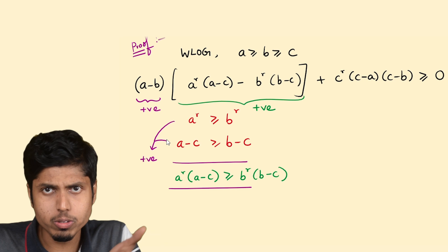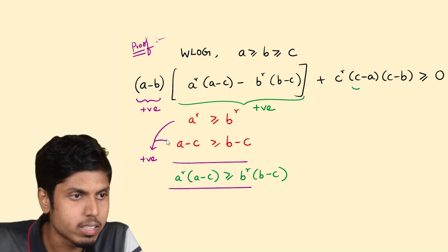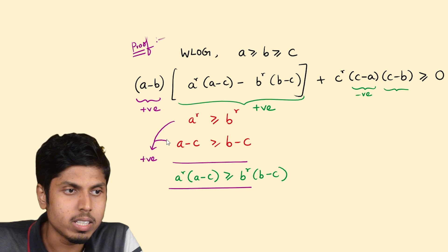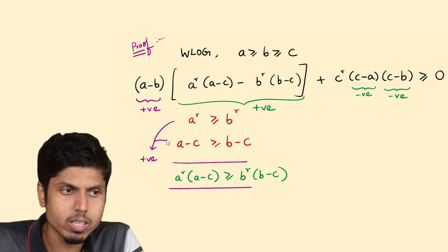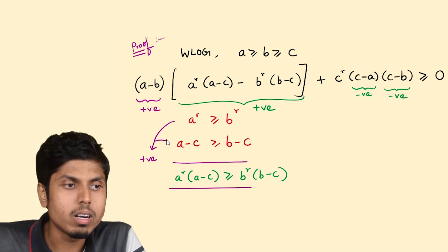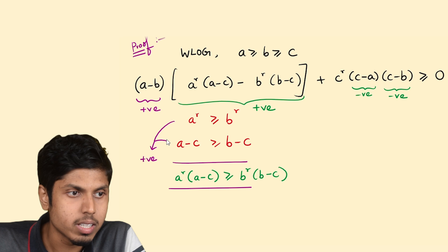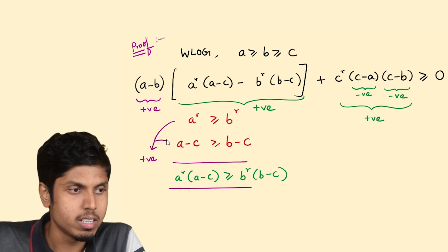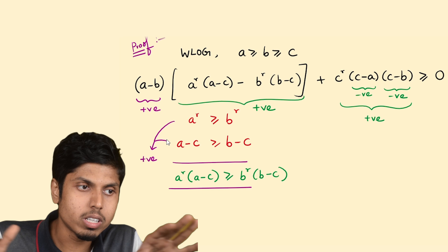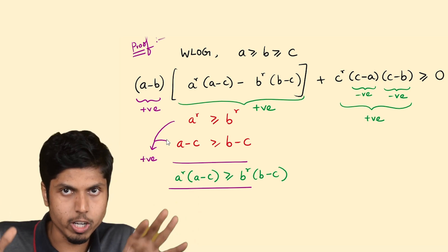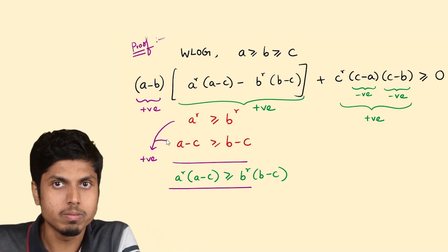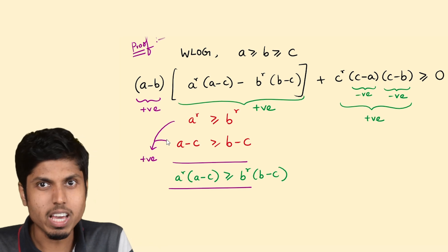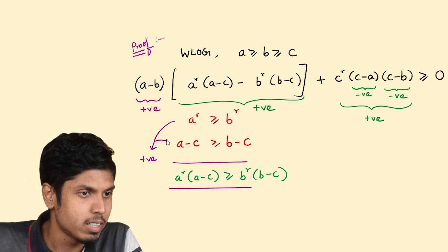Proceeding to the second term: C−A ≤ 0 and C−B ≤ 0, but the product of two negative terms yields a positive term. So we have positive times positive plus positive, which is of course positive. This inequality is thus proved quite easily.